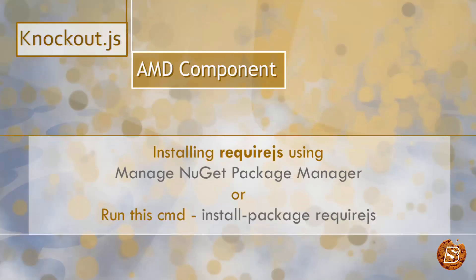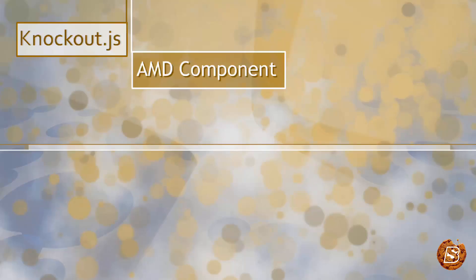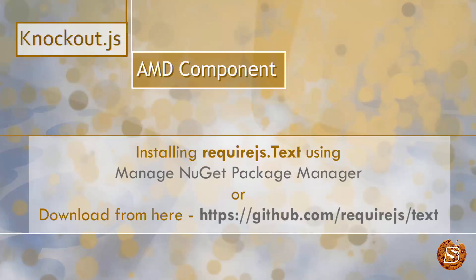We will see how to install require.js using the NuGet Package Manager in Visual Studio. You can also install it by running the command 'install-package require.js'. We will also be making use of the require.js text library, which you can install either from NuGet Package Manager in Visual Studio, or by going to github.com/requirejs/text and downloading the repo to get the text.js file.